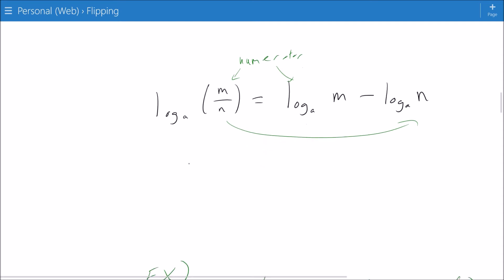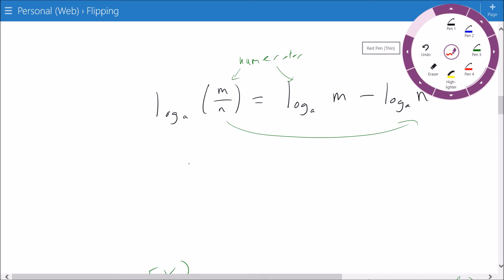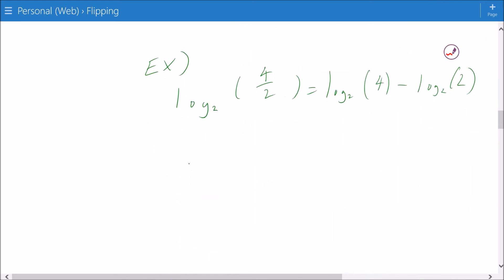So let's take a look. Here's my example. I've got log base 2 of the quantity 4 divided by 2 is equal to the log base 2 of 4 minus log base 2 of 2.